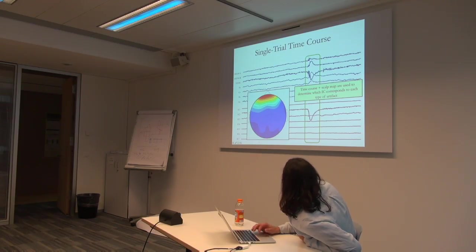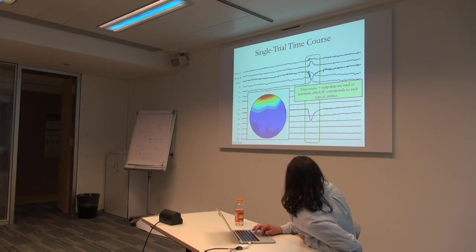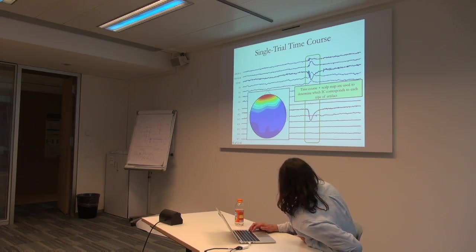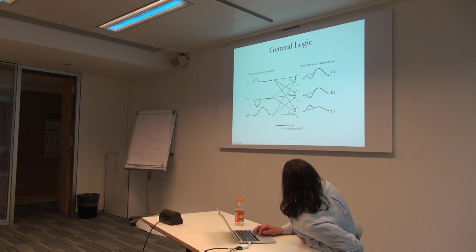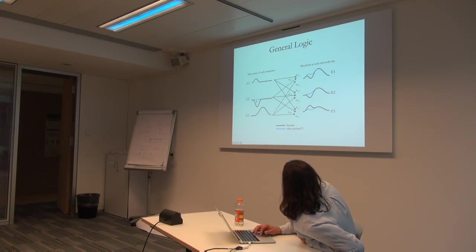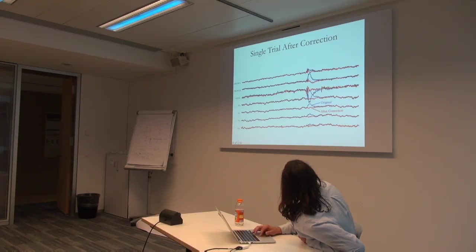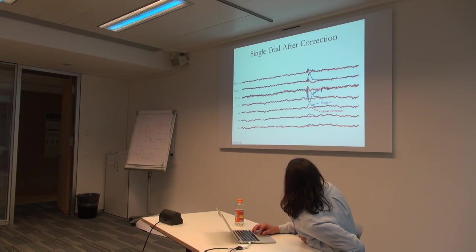Looking at the recorded EEG and the independent components: one component clearly shows activity whenever there is eye activity, clearly indicating it's an artifact component. After setting that component to zero and reconstructing, the artifacts are gone. The raw data in blue shows artifacts; after ICA artifact correction removing that component, the artifacts are eliminated.